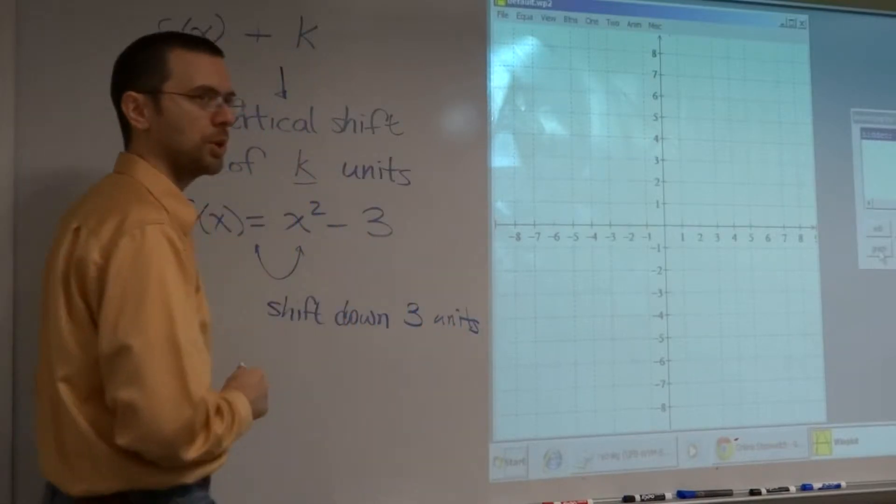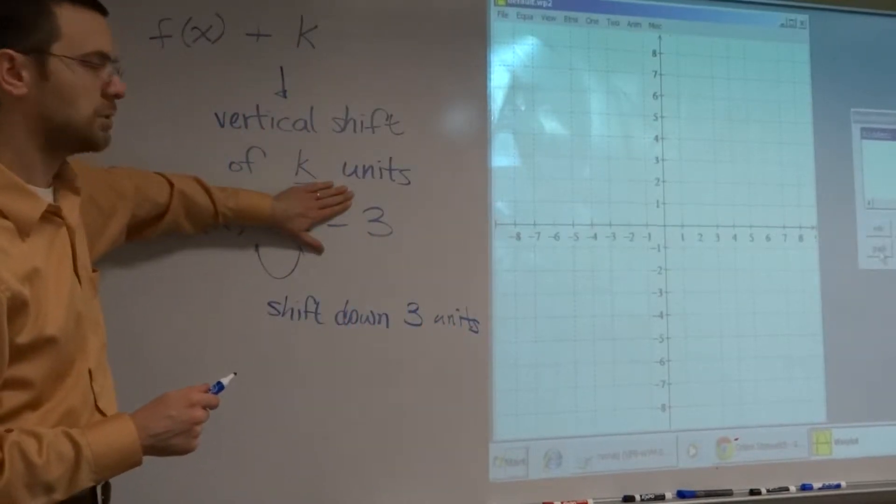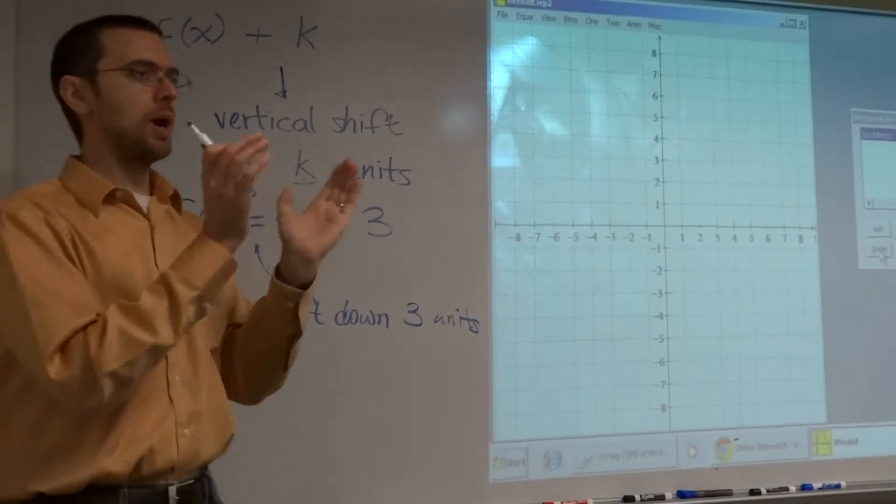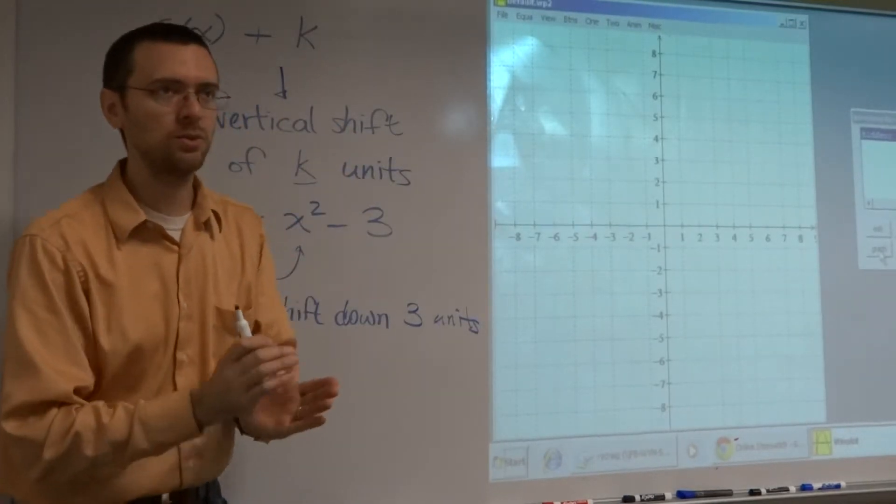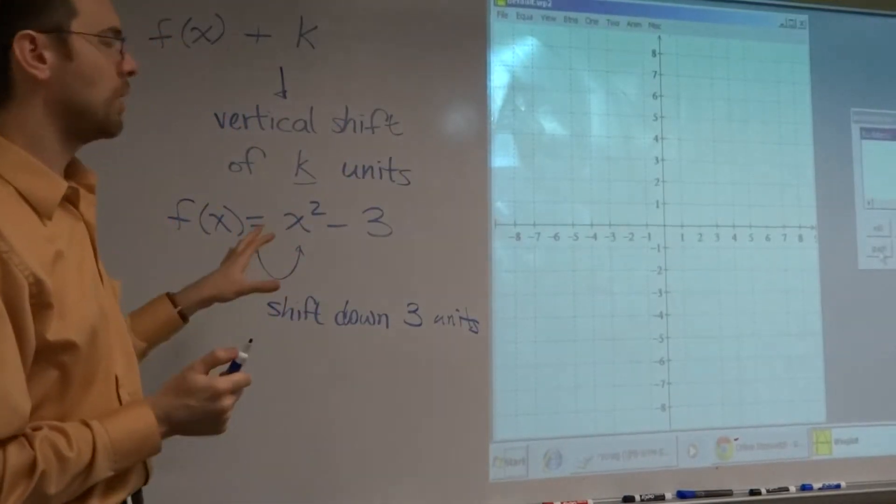You may say, well, how do you know it's supposed to be going down? It's negative. It's a minus 3, right? I'm taking my x squared, and I'm taking it down three units. Now, here's what I want you to do.